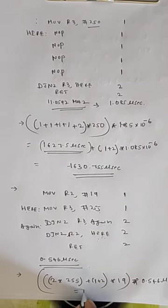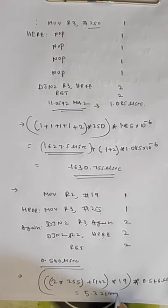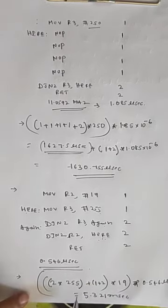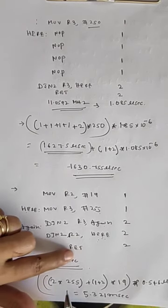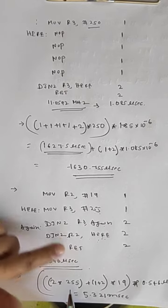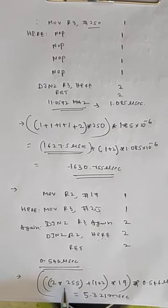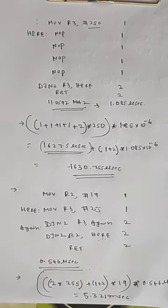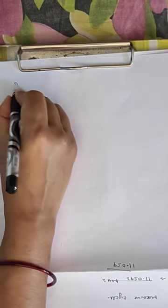The delay produced is 5.321 milliseconds. Note that in this calculation we neglected RETURN and MOV R2, #19H which are outside the loop, but including them would not make much difference. Next we will see another example involving a nested loop in a delay program.